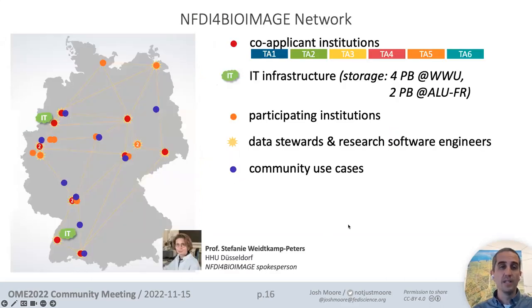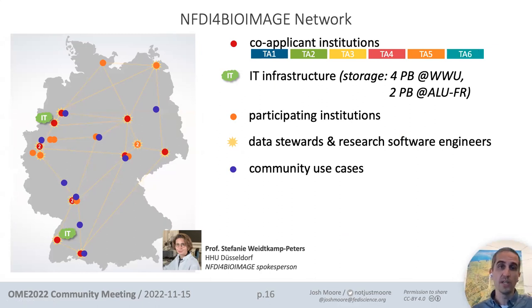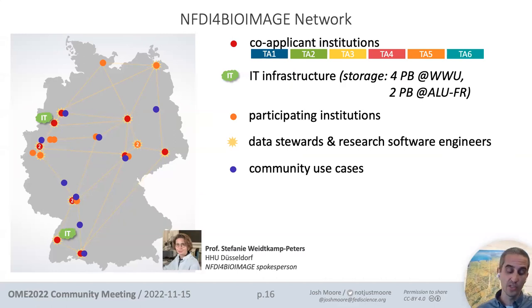I'll do everything I can to make sure NFDI for BioImage gets added to Wikidata. I have a map from Stephanie Weitkamp-Peters, the spokesperson for NFDI for BioImage. There are 11 applicant institutions across six task areas. NFDI itself does not provide hardware - the grants weren't for centralized storage - but you do want to build systems. There are two IT infrastructures involved, in Münster and in Freiburg.